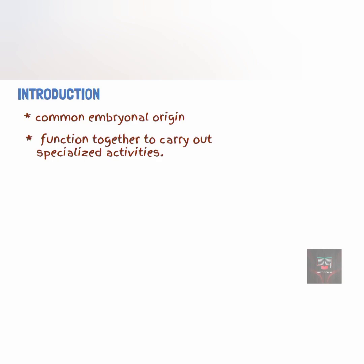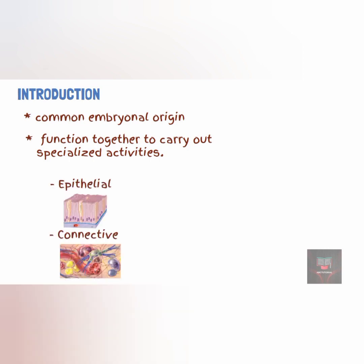Body tissues can be classified into four basic types according to their structure and functions. These classes include the epithelial tissues, the connective tissues, the muscular tissues, and the nervous tissues. Cells are held together by cell junctions in order to form tissues.